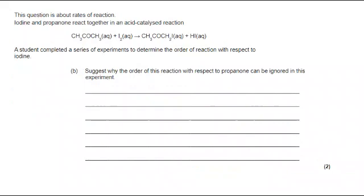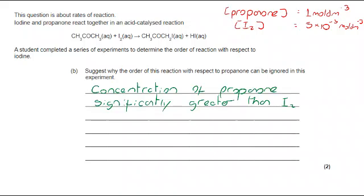Moving on to part B. I've put the equation back up there again. Suggest why the order of this reaction with respect to propanone can be ignored in this experiment. We need a bit more information, so I'm going to bring that forward. The concentrations we were provided with: propanone is 1 mole per dm³, iodine is 5×10⁻³ moles per dm³. There's a big difference there.